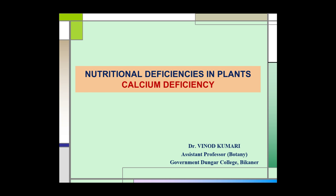Nutritional deficiencies in plants. Under this topic today we are going to study about the calcium deficiency in plants. We will cover the essential role of calcium in plants, main deficiency symptoms of calcium deficiency, soil conditions that affect the availability of calcium to plants, and the management strategy.